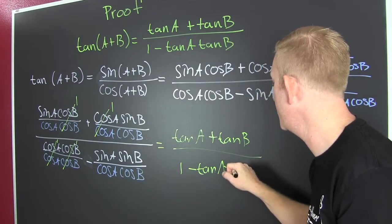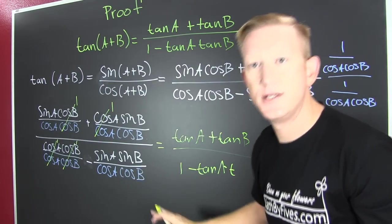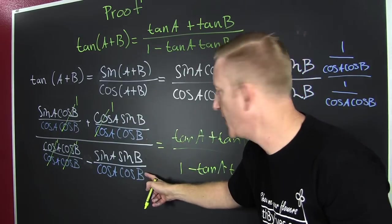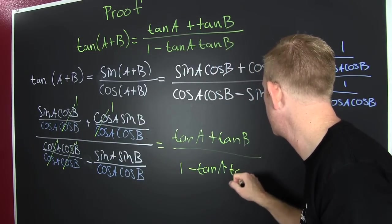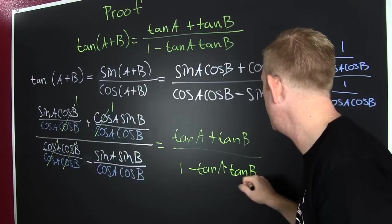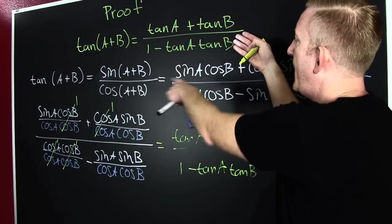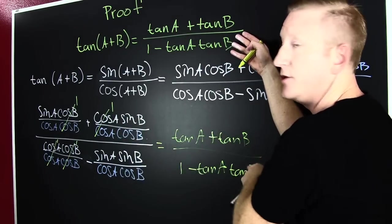Sine B over cosine B. That's the tangent of B. And then we see that it has been shown.